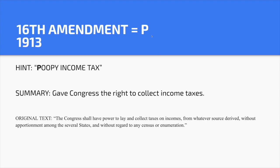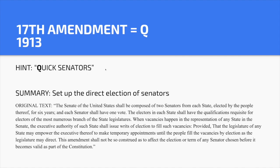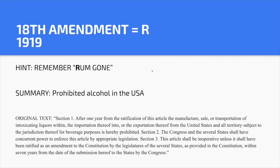Sixteenth Amendment — P. Hint: 'Poopy income tax.' No one wants to pay tax or see deductions in their pay stubs. The 16th Amendment gave the federal government the opportunity to collect income tax. Seventeenth Amendment — Q. Hint: 'Quick senators.' It set up the direct election of senators, meaning people now vote for senators — not the state governments. Eighteenth Amendment — R. Hint: 'Rum gone.' It prohibited alcohol in the USA. Another way to remember it: when you're 18, you cannot drink.